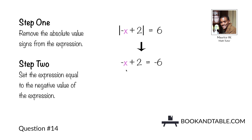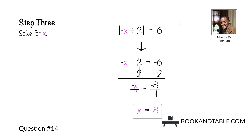Step three: solve for x. Remove the constant positive 2 by subtracting 2 from both sides, leaving us with negative x is equal to negative 6 minus 2, which is negative 8. Remove the coefficient negative 1 by dividing both sides by negative 1, leaving us with x is equal to 8. That's one answer.